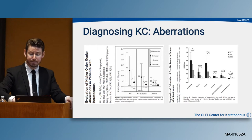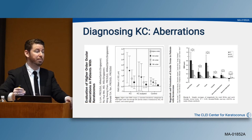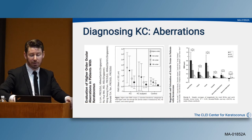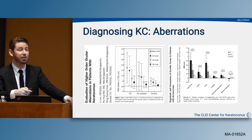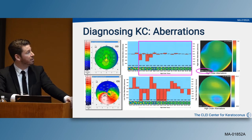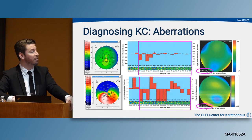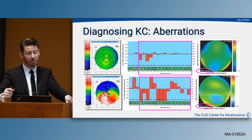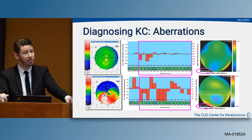Another way to diagnose keratoconus is to look at aberration profiles. Kosaki and Lim's 2007 papers showed differences in aberrations between normal corneas, early keratoconus, and true keratoconus—with a specific elevation in coma and trefoil. A normal cornea has an RMS of about 0.4, while a clearly keratoconic eye has an RMS of about 6, significantly out of the ordinary and helpful in diagnosing keratoconus.